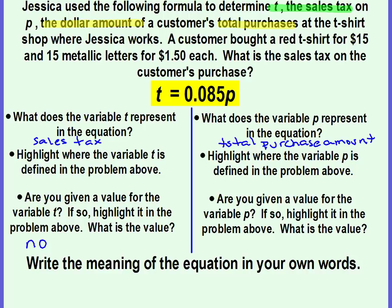Okay, are we given a value for the variable P? If so, highlight it. So I'm actually going to use the same color. We are given a dollar amount. We're told that they bought the red t-shirt for $15 and 15 metallic letters for $1.50 each. And then what is the value? So we're going to have to do a little bit of math here. The value is going to be the $15 for the t-shirt plus the 15 letters that are at $1.50 each. So if we do the math, we have the $15. And now we're going to need to multiply the 15 letters times the $1.50 each. Add them together and you get a total of $37.50.